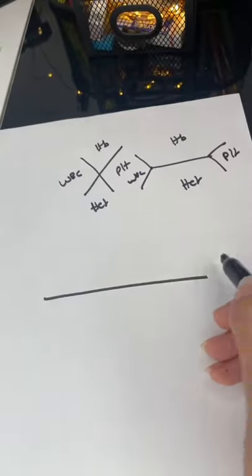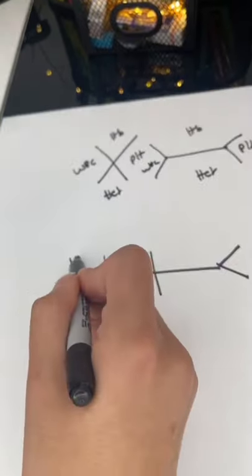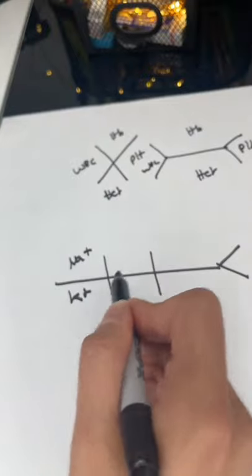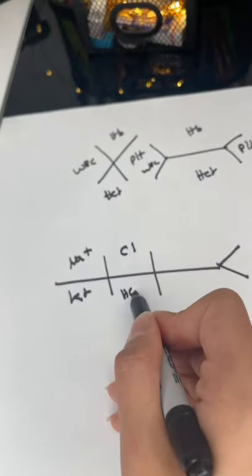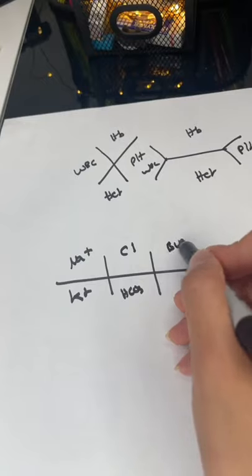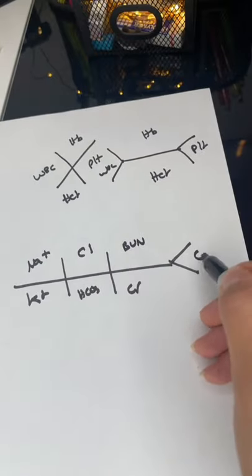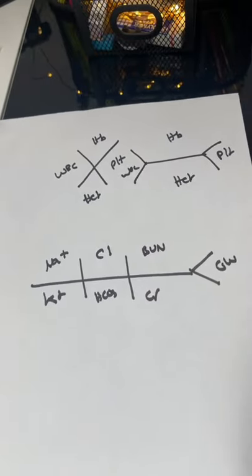Over here, when you see this one, so basically this is what it looks like. This is where you're going to put your sodium, your potassium, your chloride, your bicarb, your BUN, your creatinine, and your glucose. And there you have your cheat sheet.